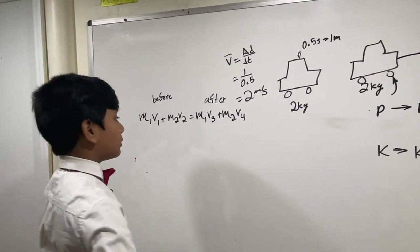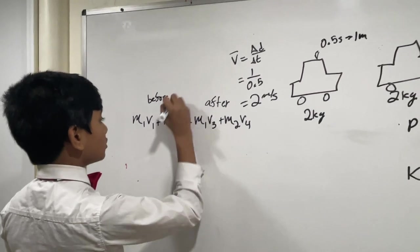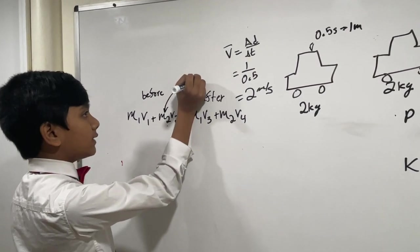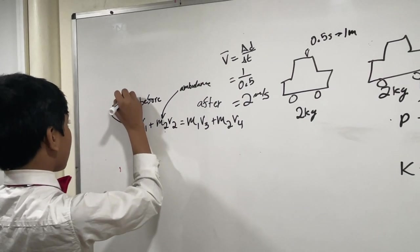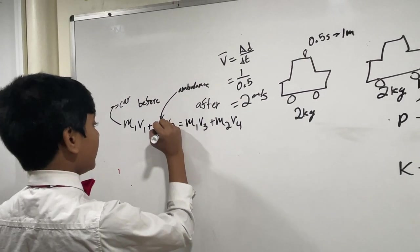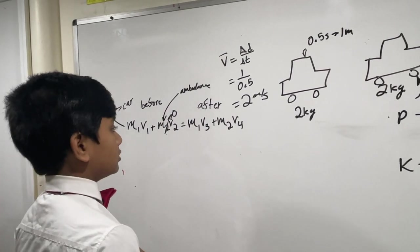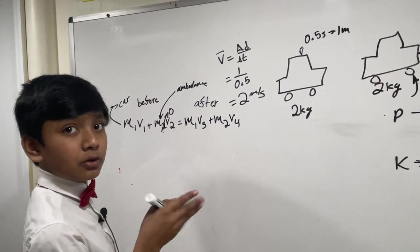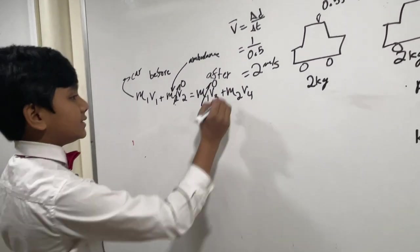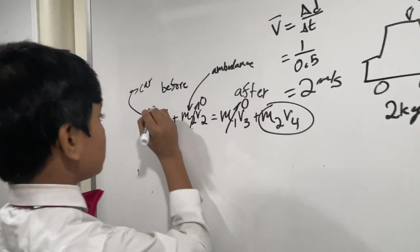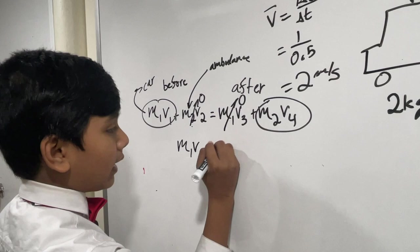And now, let's put some specifics. We know that M2, and we're going to call number 2 the ambulance, and number 1 the car. We know that the ambulance wasn't moving before the collision, so 0 meters per second. And after, the car was barely moving, so we'll just say it wasn't moving, because you can't achieve a perfectly elastic collision. So, we're just left with these sides of the equation. M1 V1 is equal to M2 V4.